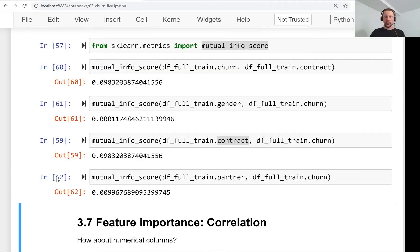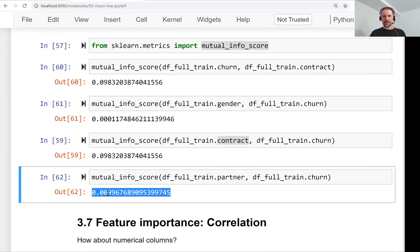The interpretation of this as number of bits that we learn is tricky, so we cannot really quantify it. It's very difficult to interpret. But what we can definitely learn from these numbers is the relative importance of each feature. We see that contract is definitely more important than partner, and partner is definitely more important to know than gender.